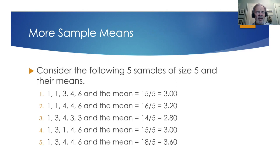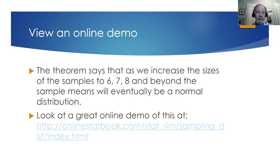You can begin to see that these form a distribution, but is it the normal distribution? The theorem says that as we increase the sizes of the samples to 6, 7, 8, and beyond, the sample means will eventually be a normal distribution.